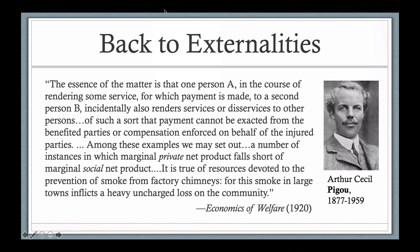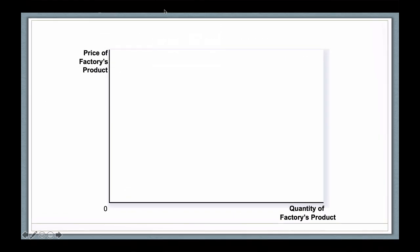So how would an economist graph this out? So here we have the example of a factory that is polluting. So this factory is producing some product and attendant to the production of that product is some level of pollution. Now, we're going to focus here on the factory because it is the one that is producing the externality. So on this figure, the x-axis at the bottom is the quantity that the factory produces. And the y-axis on the left is the price that is charged for its product.